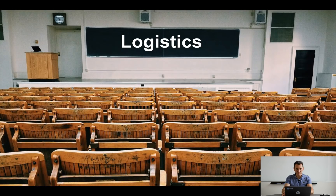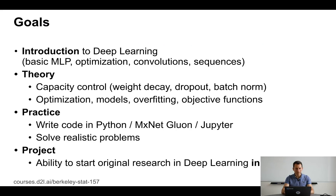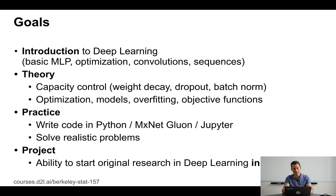Let's start with logistics — this is really just to make sure we know how the class operates and how to get everything done. The goal of this class is to give an introduction to deep learning: basic multilayer perceptrons, optimizations, convolutions, sequence models like LSTMs, maybe a bit of attention and so on. This is really just the bare bones of how to build a deep network, but I also want to make sure that everybody understands the theory of deep learning behind it — at least as much as you can cover in an undergrad introduction to deep learning course.